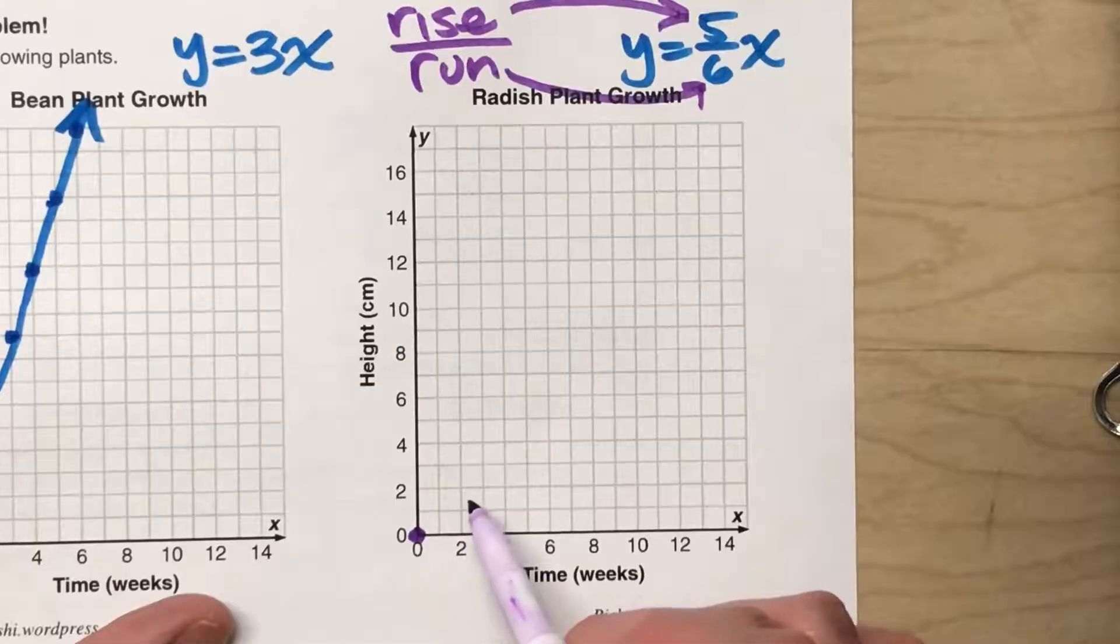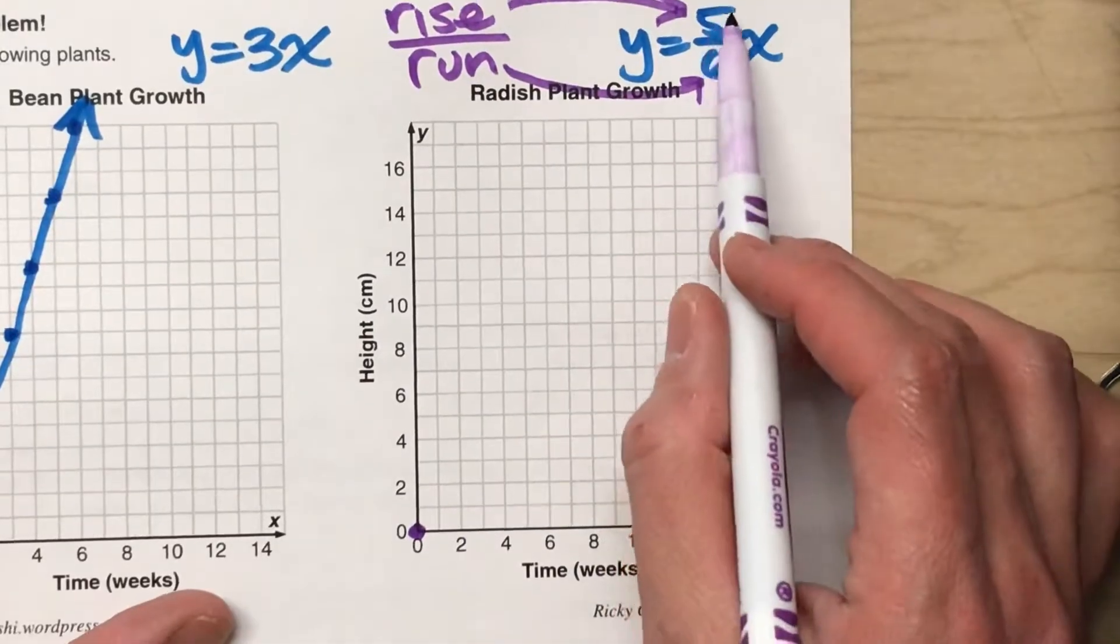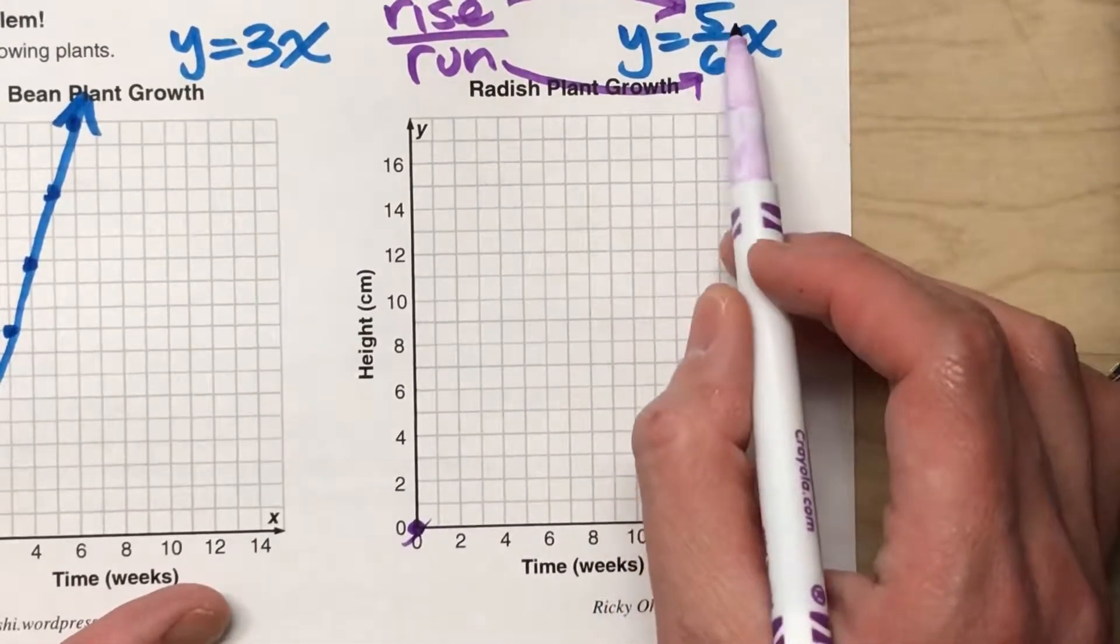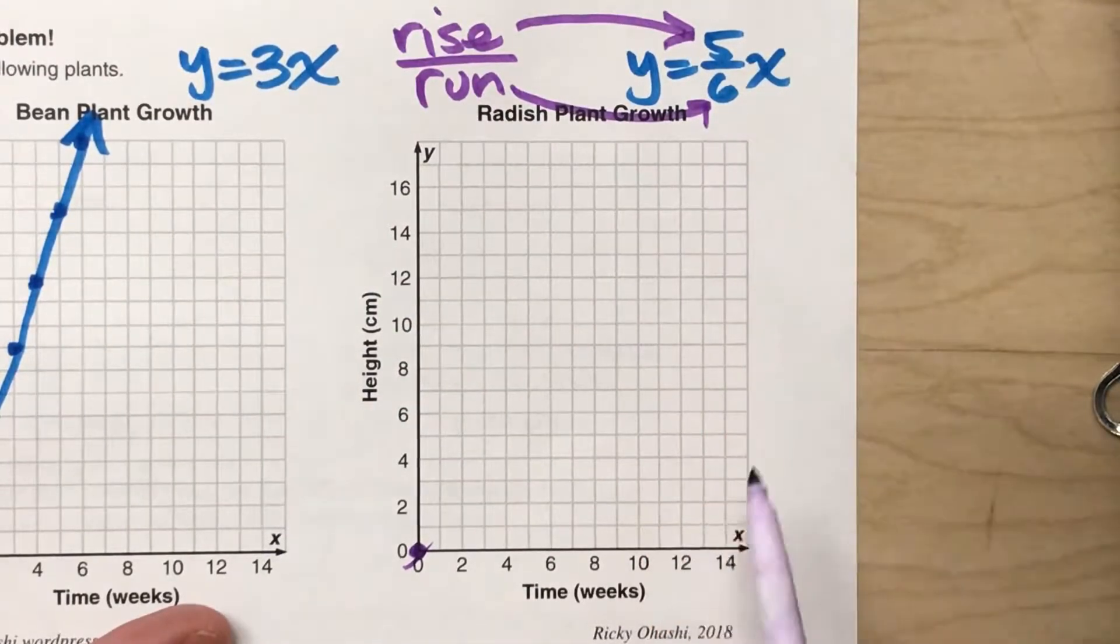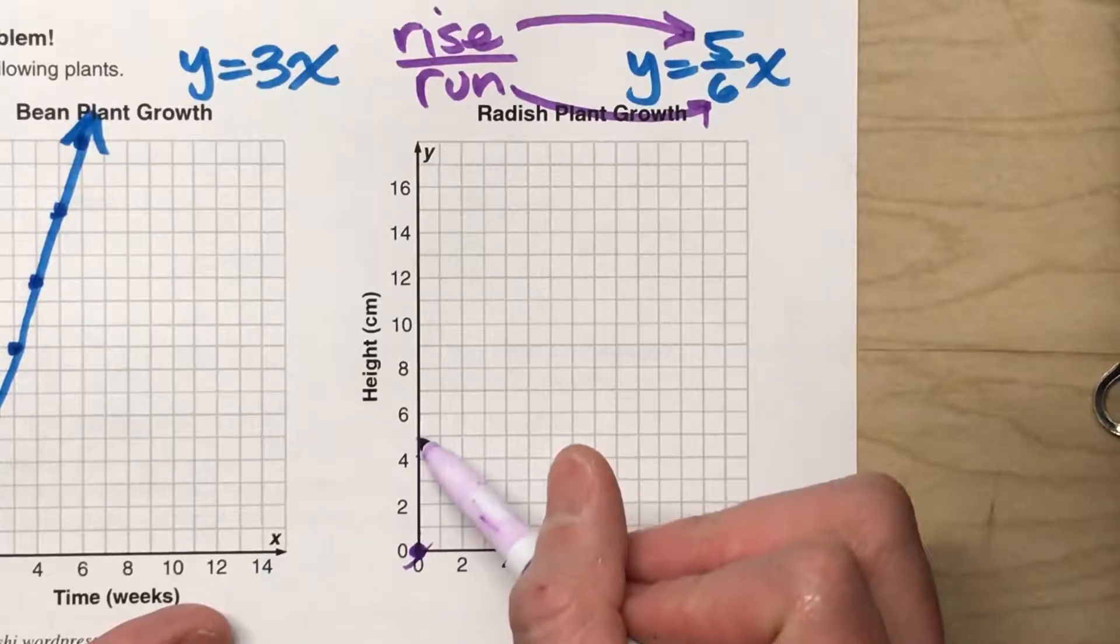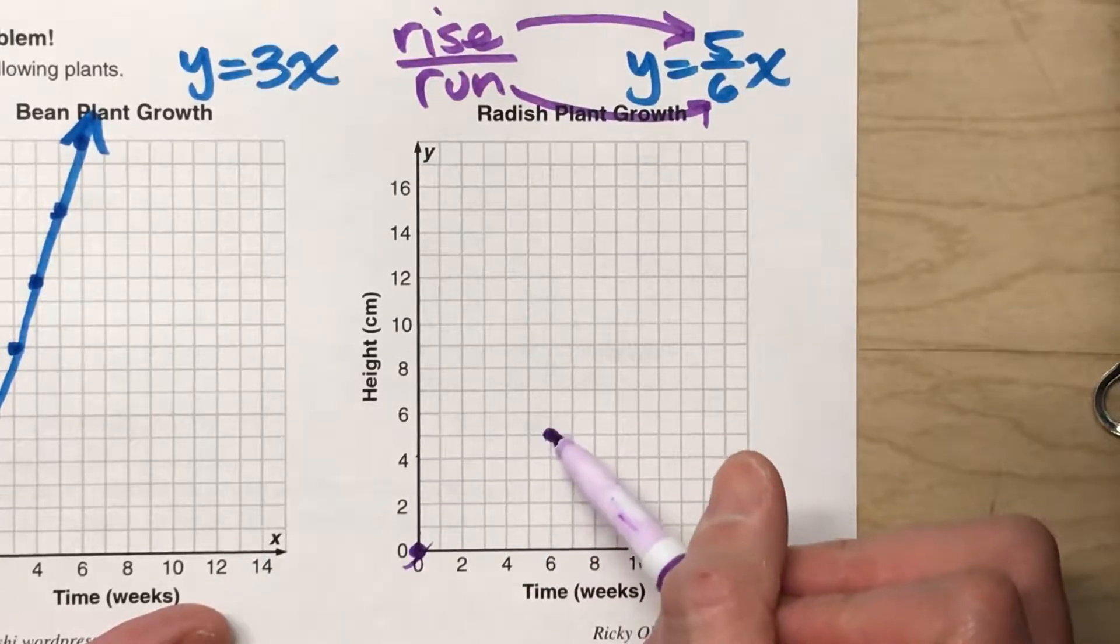instead of going 5 sixths of a centimeter every week, what I could do is from this point here, go up 5 centimeters, and then over 6 weeks, and plot a point. Up 5, right 6, plot a point.